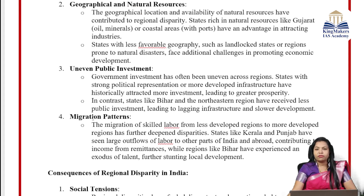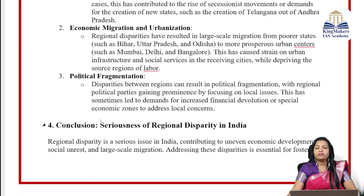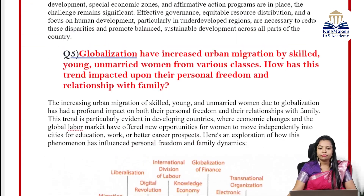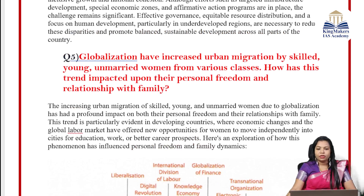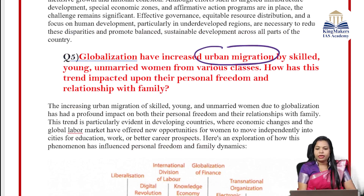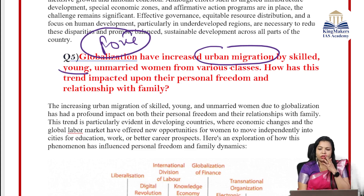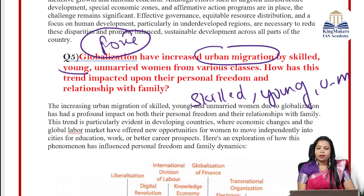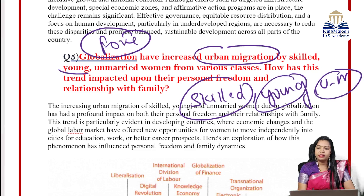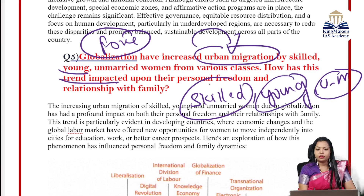The areas of migration and reasons include economic opportunity, lifestyle choices, and personal independence. The impact on personal freedom: more financial autonomy — they get income and spend it themselves. Career choices, opportunities, and even the choice of partner for marriage become their own. Young unmarried women get decision-making power, social mobility, and access to education and skill development. They may opt for delayed marriage and family planning, gaining control over reproductive rights. This connects skilled, young, and unmarried women as a demographic.